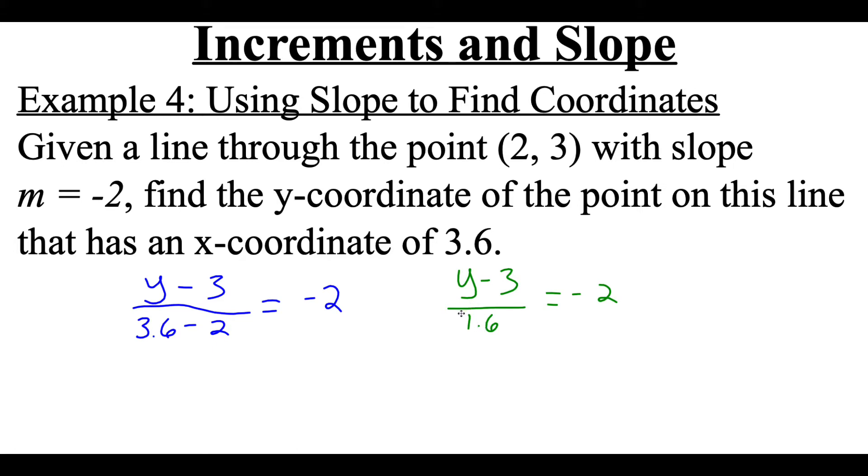Now to solve to get y alone, I have to get rid of that minus 3 by adding 3 on both sides. So we're going to end up with a y value of negative 0.2. So that point on that line would be (3.6, -0.2). That's going to be it for this video, thanks for watching.